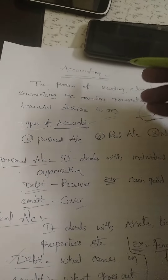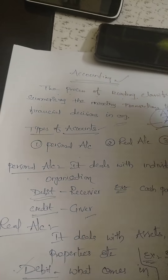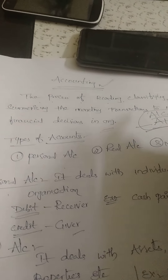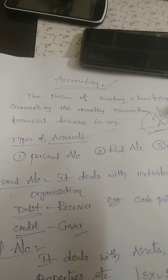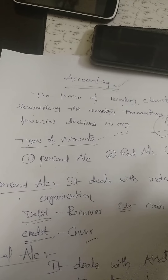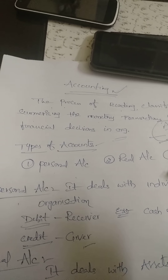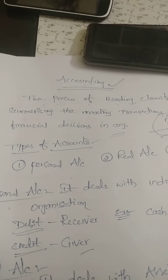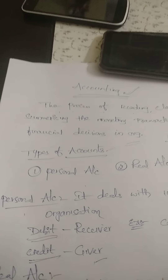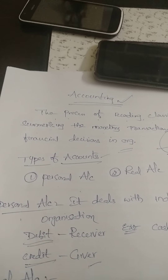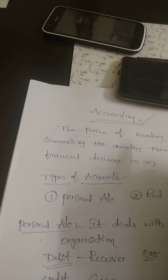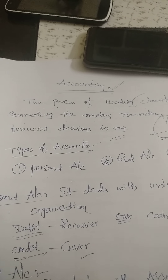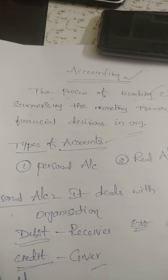Good afternoon everyone. Today we are going to discuss financial accounting. Accounting is the process of recording, classifying, and summarizing monetary transactions to make financial decisions in the organization. Monetary transactions means anything the company purchased, received, or any checks given — whatever transactions the company makes, everything has to be recorded. Then according to the types of accounting, we classify and prepare the final accounts to produce to the government.